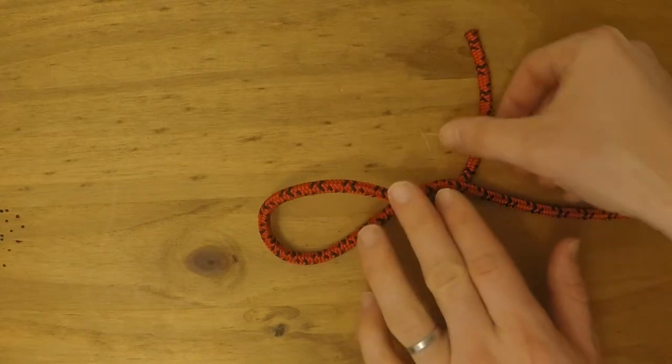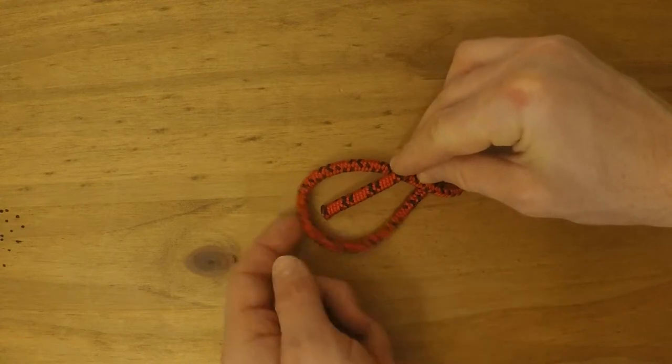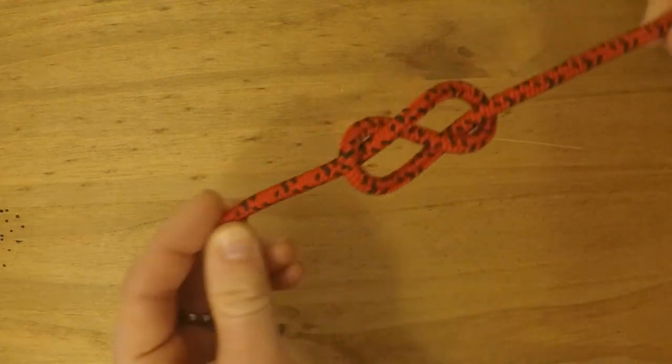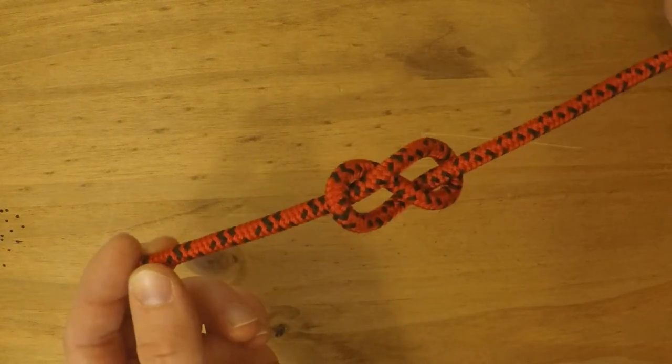The next part is to go through the loop that we made from on top. As you pass from on top, you'll notice the resemblance of figure eight, and that's where the knot gets its name.